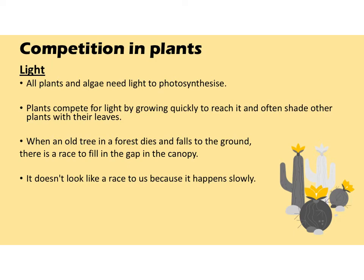Now we're going to look at competition in plants. The first thing that plants will compete for is light — all plants and algae need light for photosynthesis. Plants compete for light by growing quickly to reach it and often shade other plants with their leaves. You can see that plants always grow towards the sun to get the most light. When an old tree in a forest dies and falls, there is a race to fill the gap in the canopy, as other trees race to fill that space to get the most light.